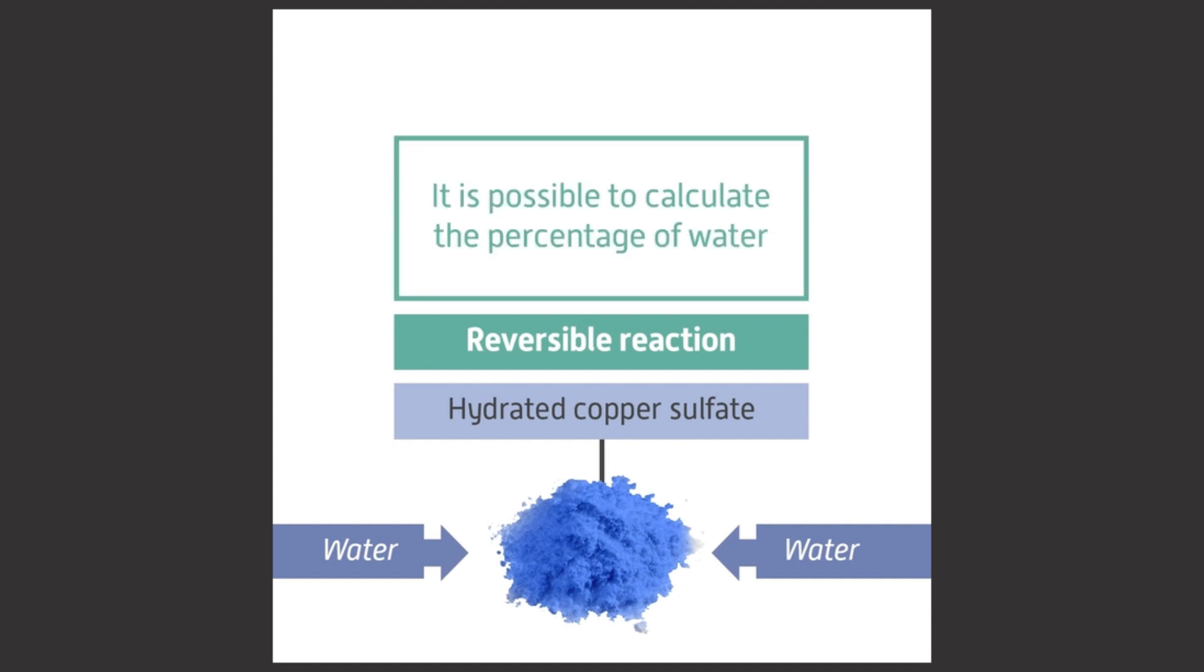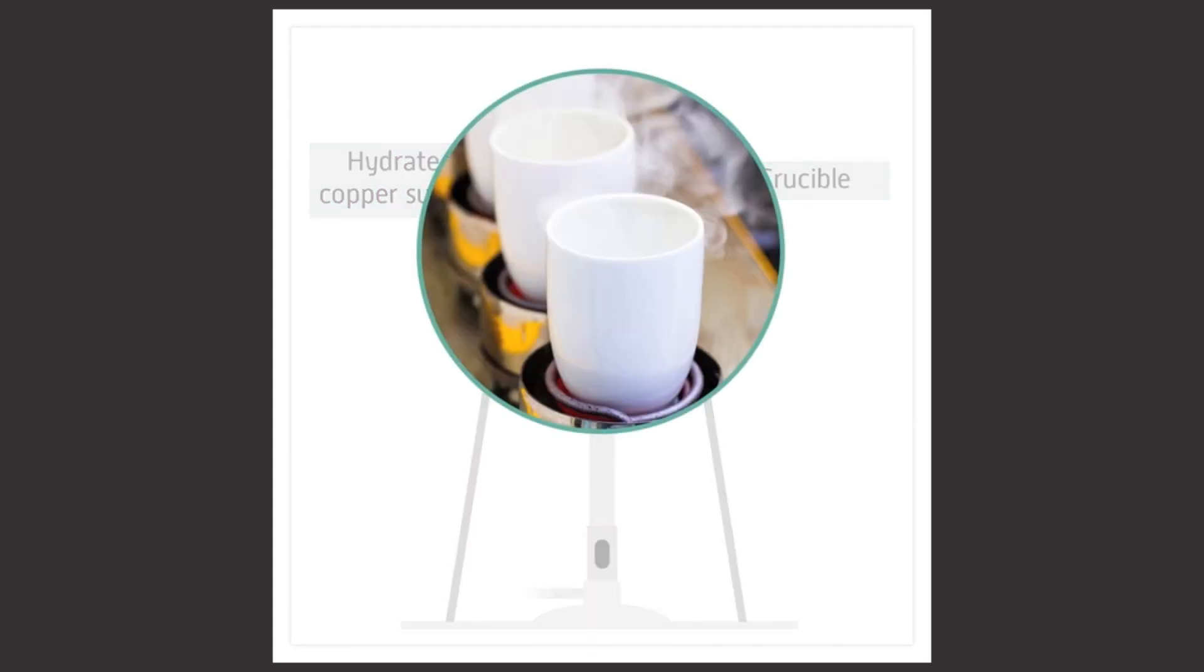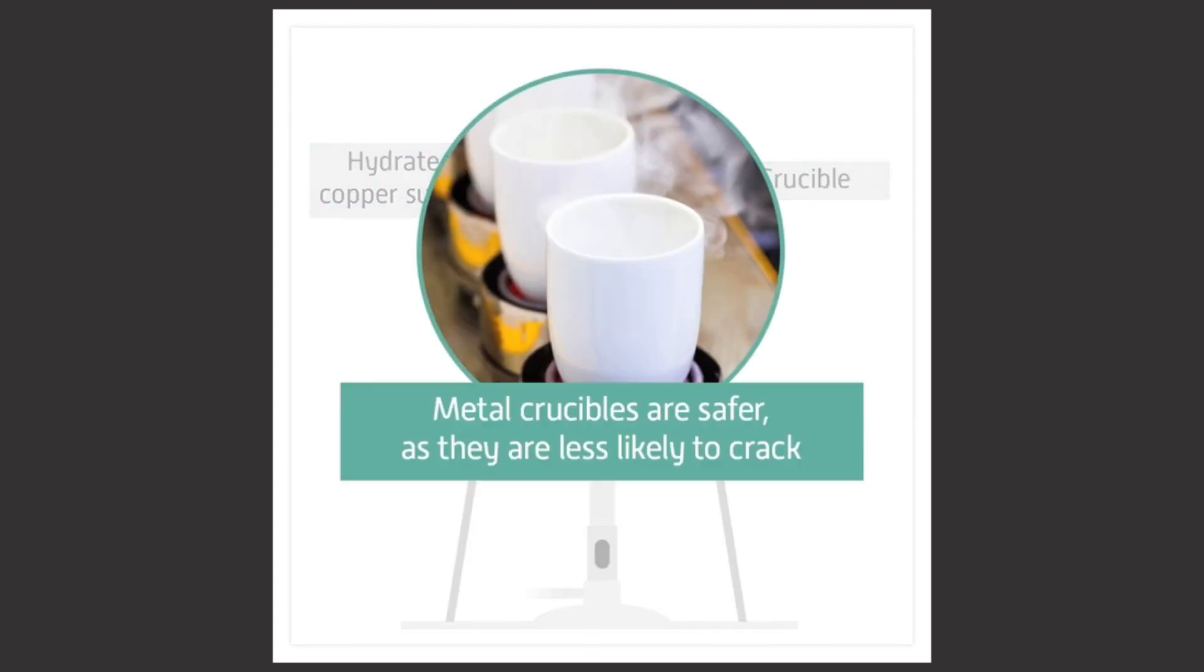You can carry out an investigation to calculate the percentage of water in hydrated copper sulfate. In order to do this, you will need to heat the hydrated copper sulfate over a Bunsen burner using a piece of equipment called a crucible. These are small dishes made from porcelain or metal. The metal ones are safer to use because there is less risk of them cracking.